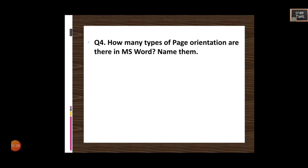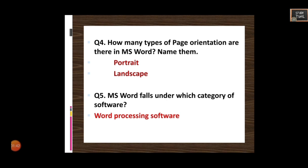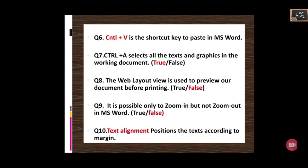How many types of page orientation are there in MS Word? There are two — Portrait and Landscape. MS Word falls under which category of software? It is word processing software. The shortcut key to paste in MS Word is Ctrl+V. Ctrl+A selects all the text and graphics in the working document — True.